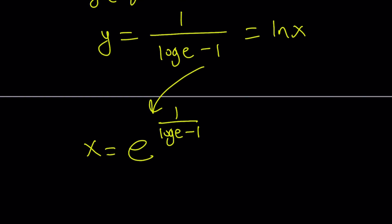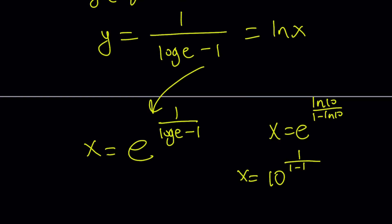Now we had different results before — that result was x equals e to the power ln 10 over 1 minus ln 10, or x equals 10 to the power 1 over 1 minus ln 10. If you go ahead and compare these values, you're going to realize that they are the same.